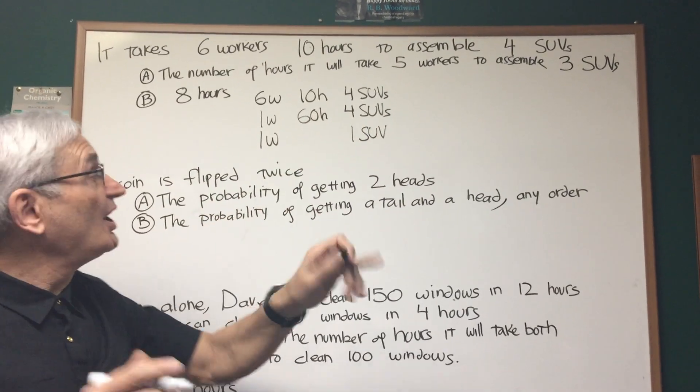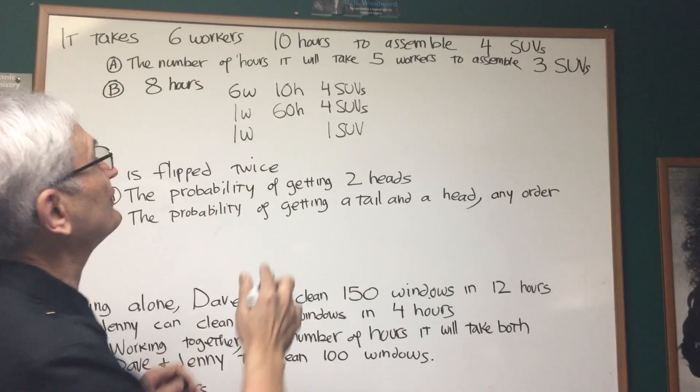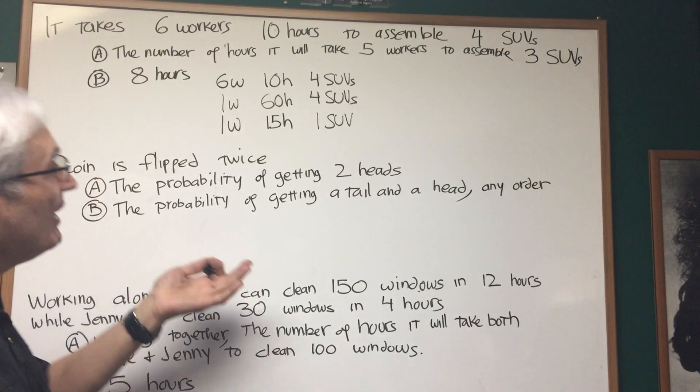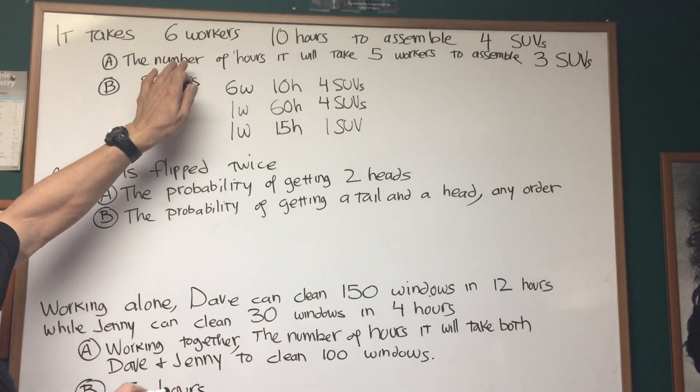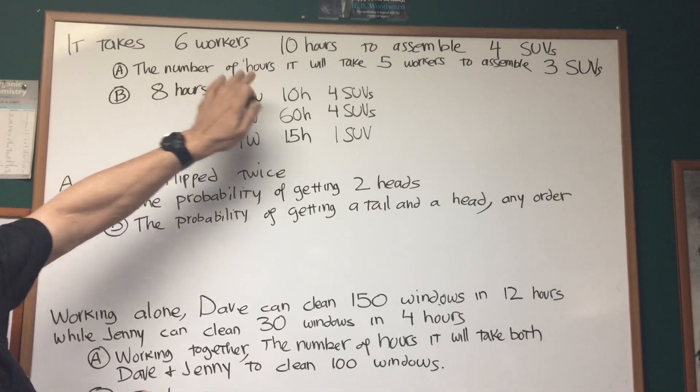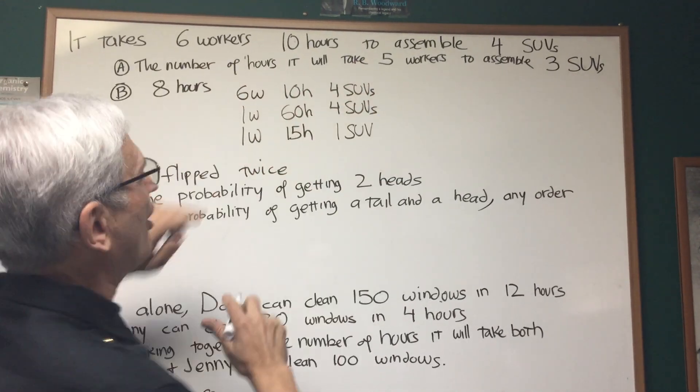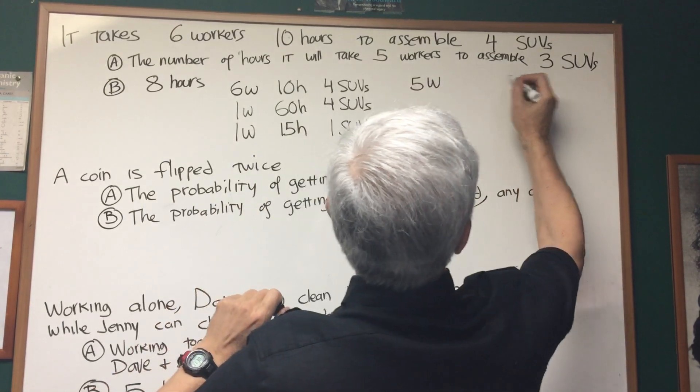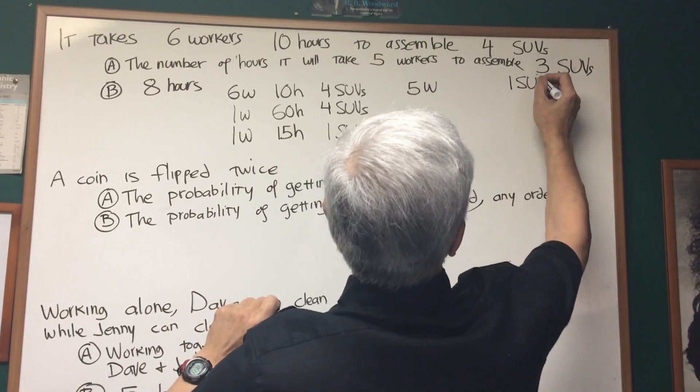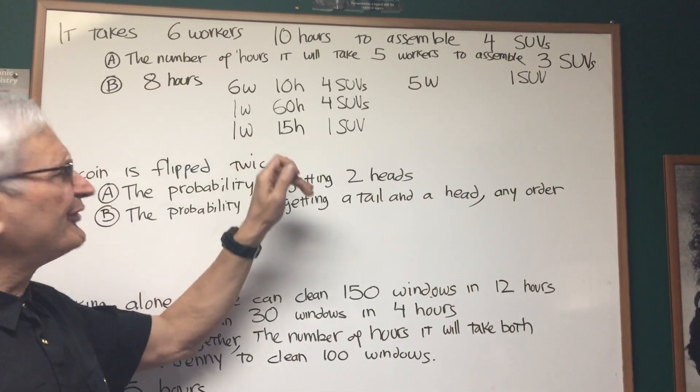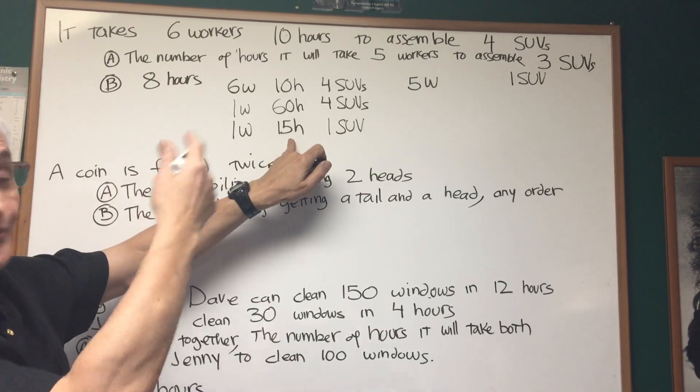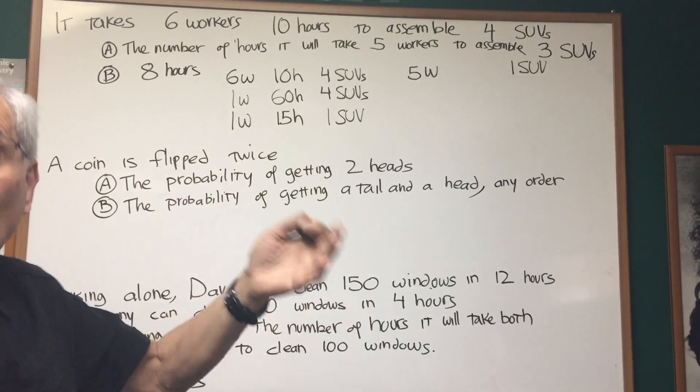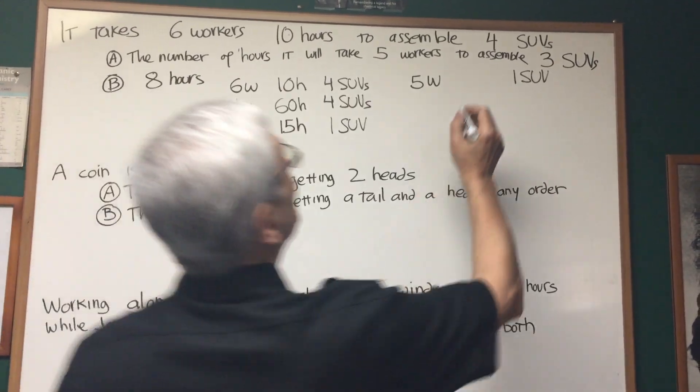Okay, so now we can look at expression A. How many hours will it take five workers? All right, what about five workers? Five workers, let's keep it as one SUV. How long will it take five workers? Well, if it takes one worker fifteen hours, five workers working simultaneously it's going to take five times less, or only three hours.